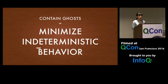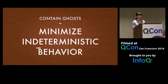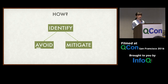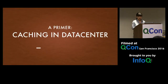So how do we do that? First, identify what these potential areas of indeterminism are. Then see if you can get rid of them altogether — that's the happy case. If we cannot avoid doing those things, then let's try strategies to mitigate these problems. Before going into this, I'll give a very short two-minute primer on caching in data centers, because some of the context will apply in later discussion.